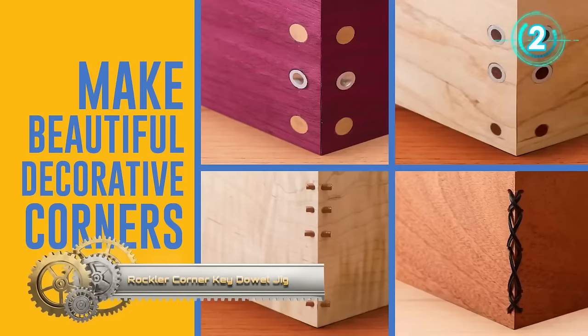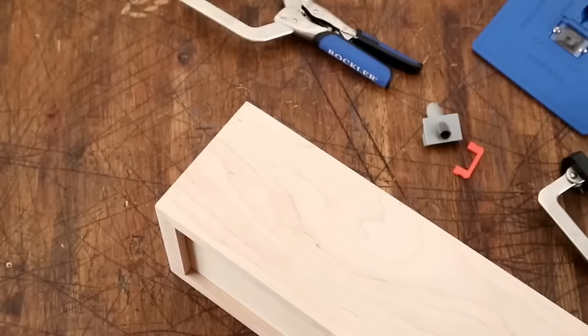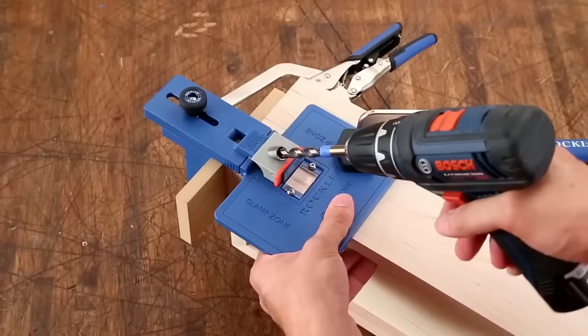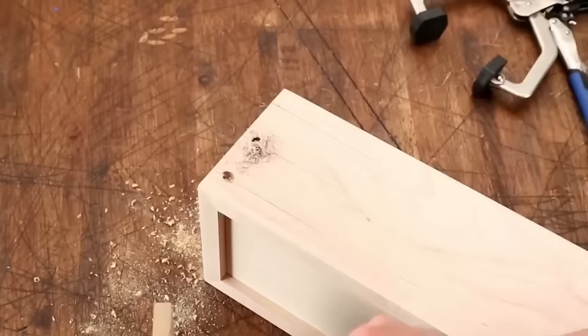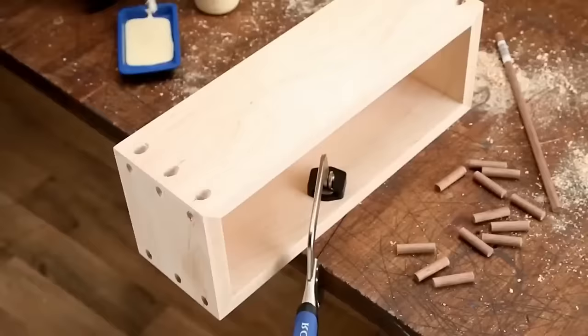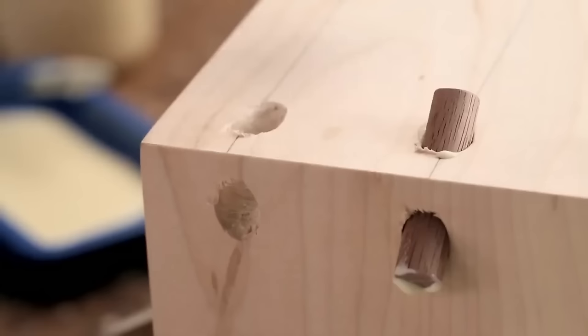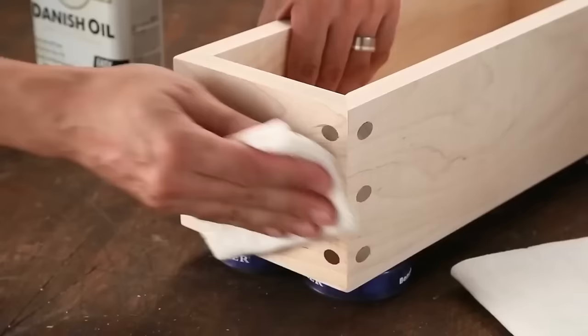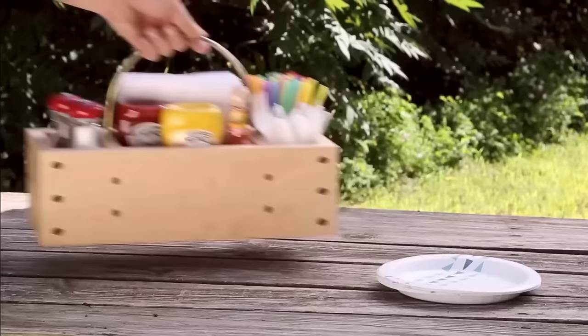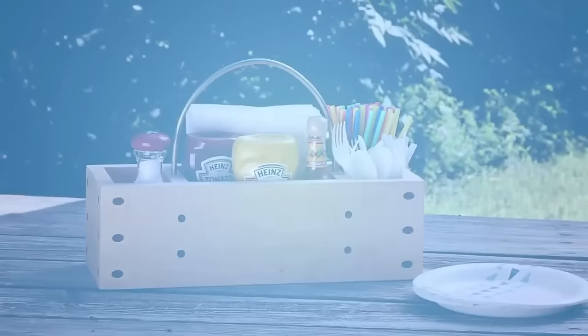The Rockler Corner Key Dowel Jig is a precision woodworking tool that significantly simplifies the process of drilling angled dowel holes in corner joints, effectively reinforcing the strength and longevity of your woodworking projects. This user-friendly jig easily clamps onto your workpiece and aligns the drill guide accurately with your desired dowel hole location. By using the appropriate size drill bit, you can confidently bore holes at the correct angles and depths, thanks to the jig's reliable guidance. Its versatile nature makes it suitable for woodworkers of all skill levels, offering substantial utility in crafting diverse projects, such as boxes, cabinets, and furniture. If you seek precision and durability in your woodworking endeavors, the Rockler Corner Key Dowel Jig is an invaluable addition to your toolkit.